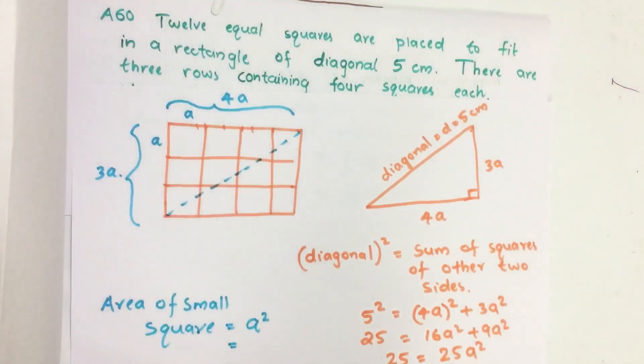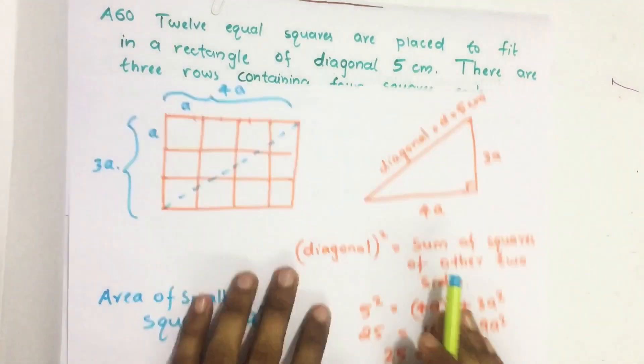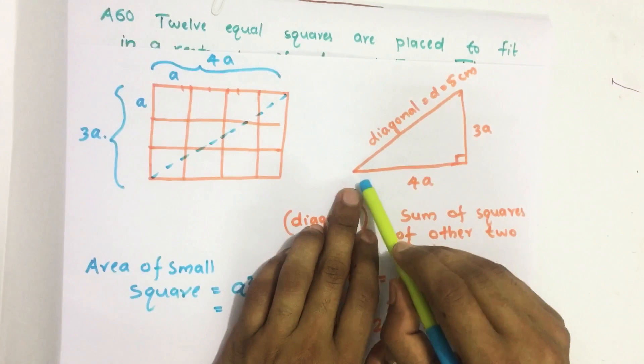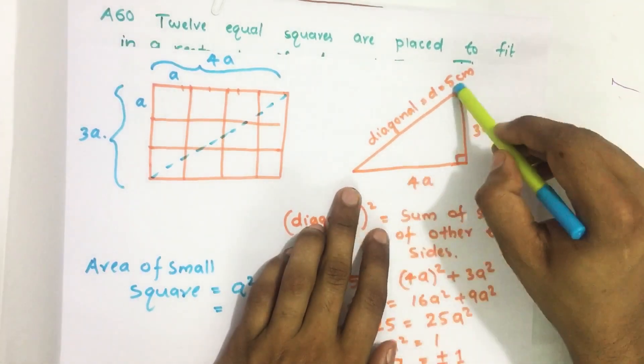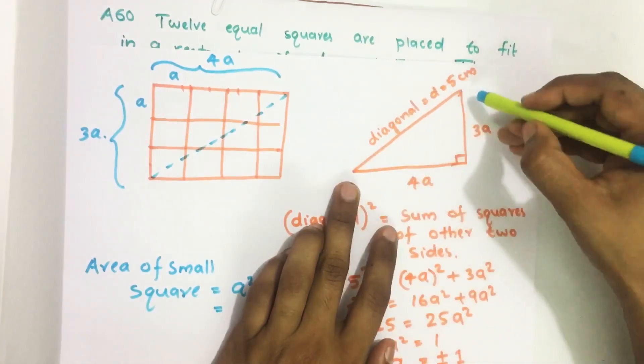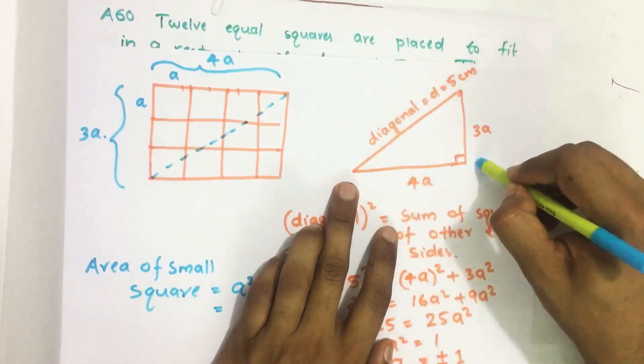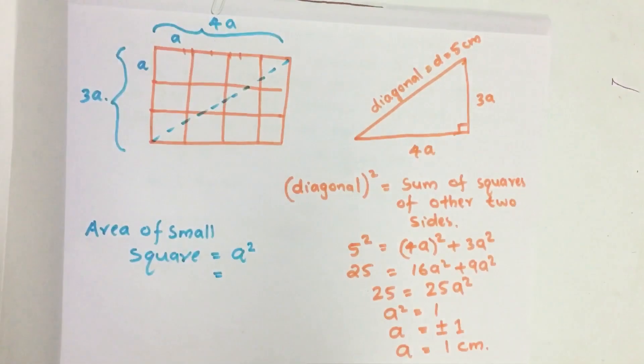Now let us see how we find the diagonal of a rectangle. When we take a half portion of this rectangle, then this is the diagonal, this is one side, this is the other side. So how do we find the diagonal?